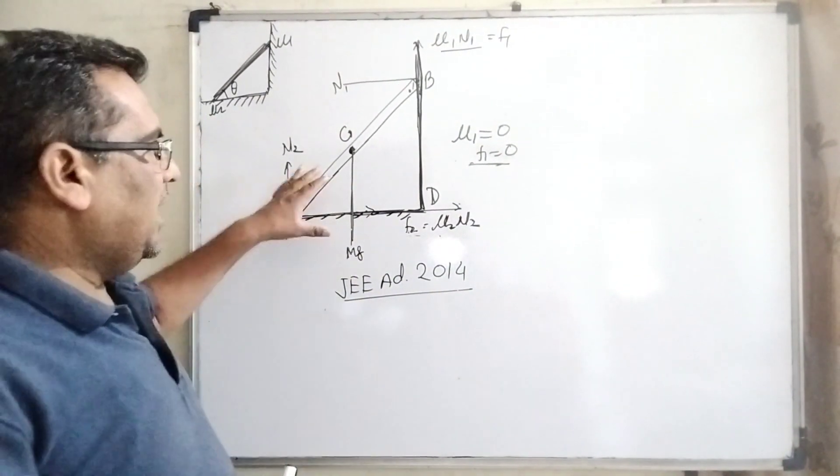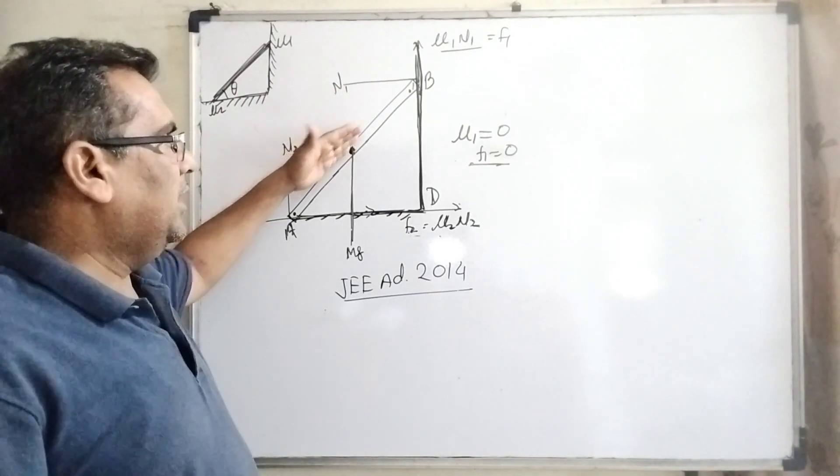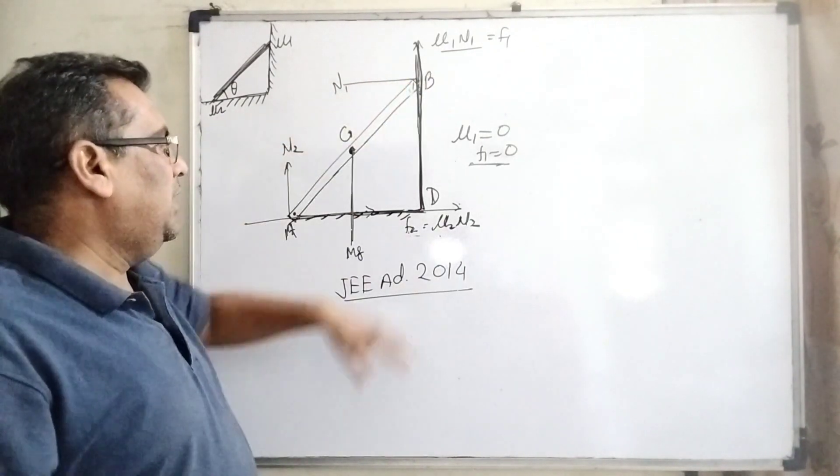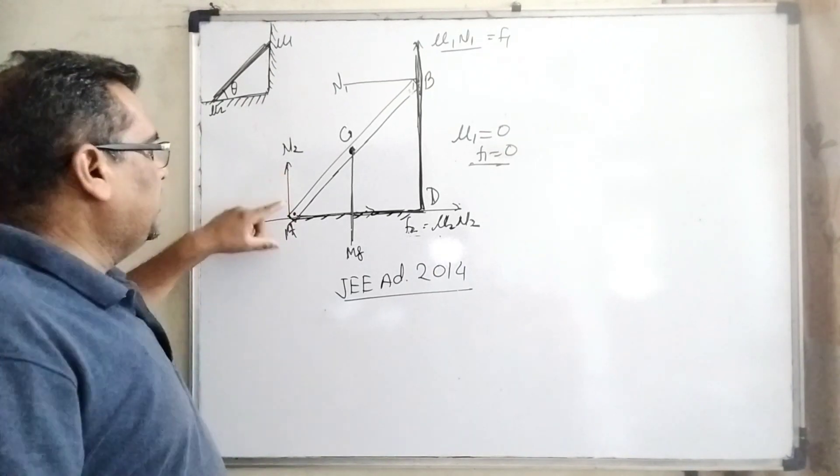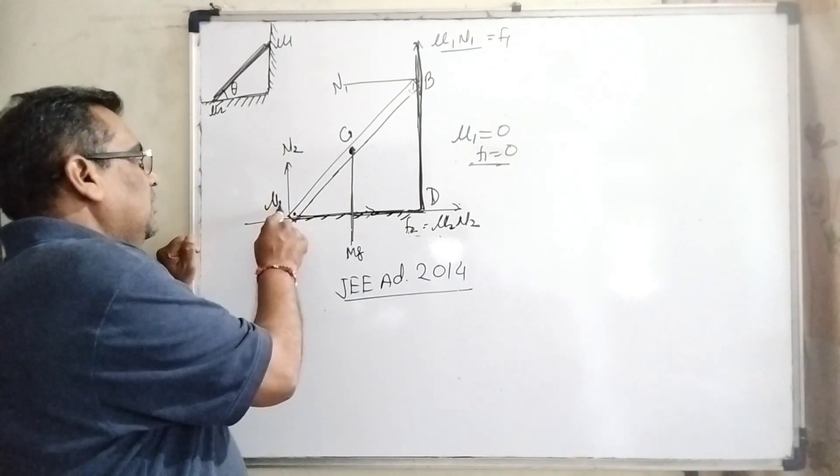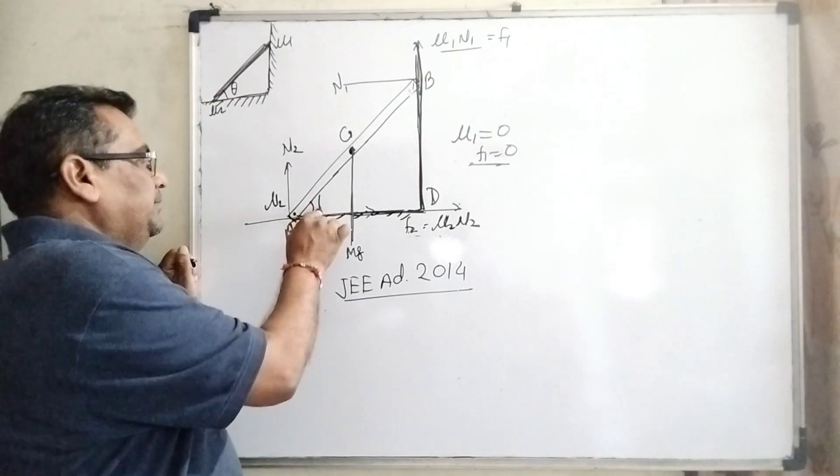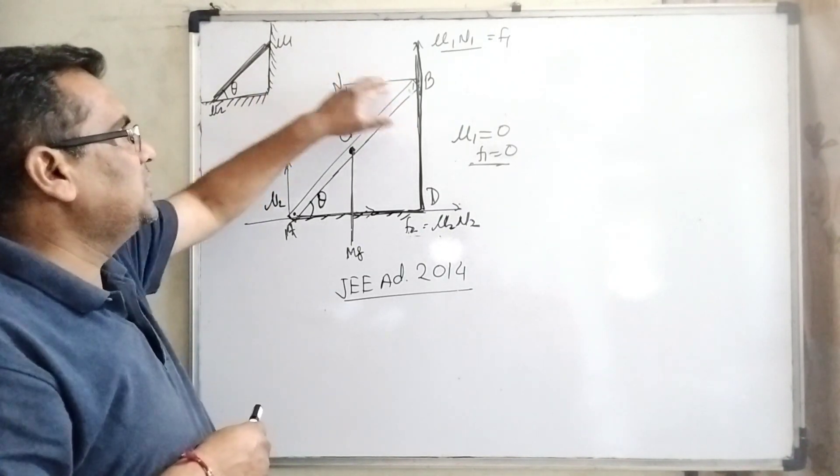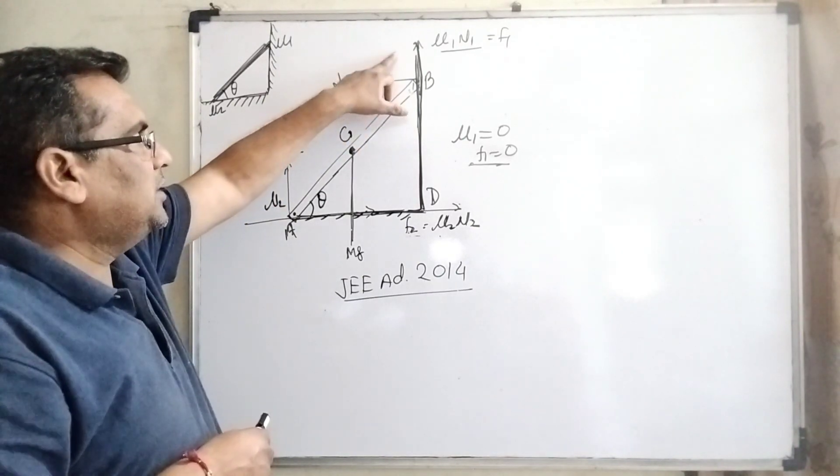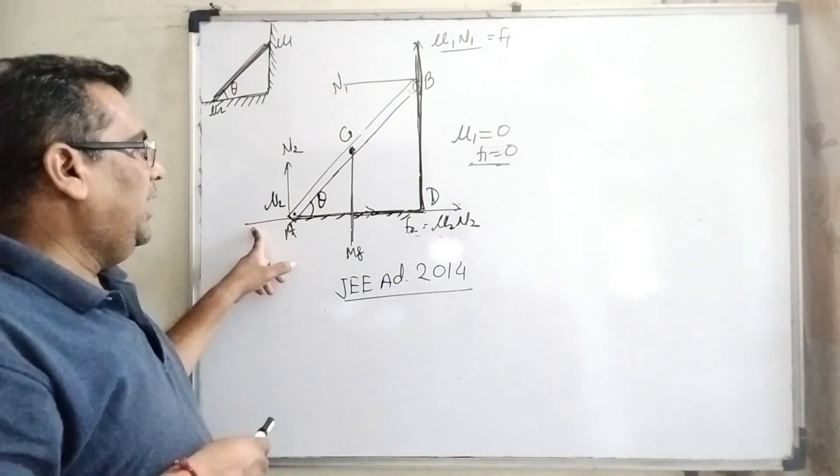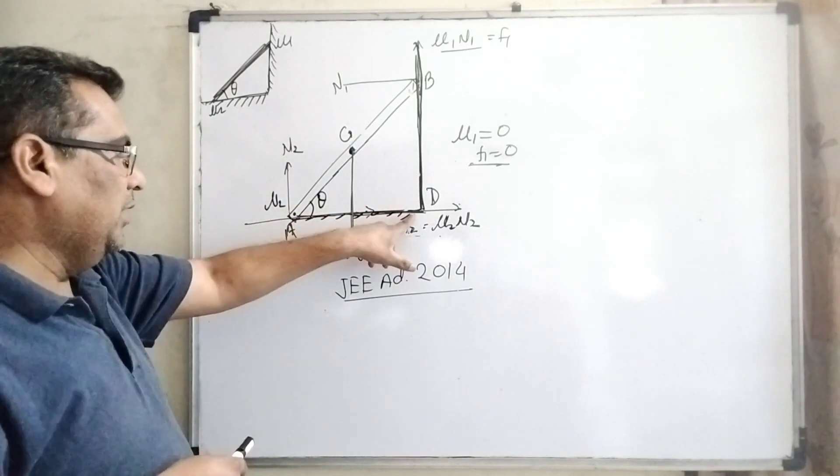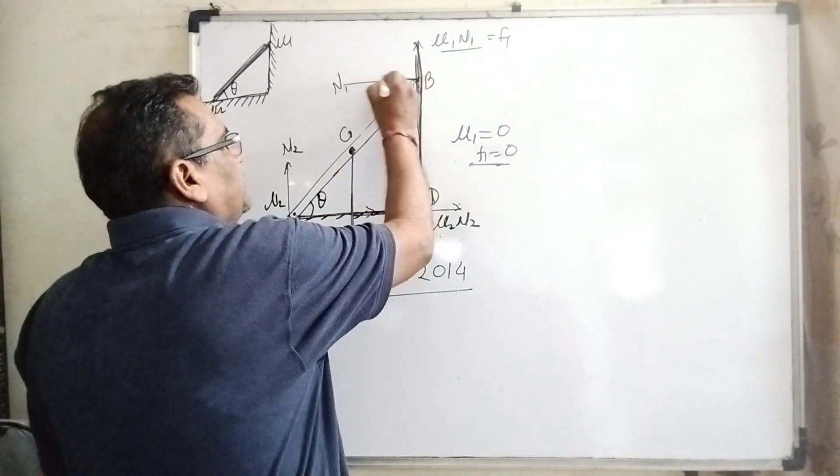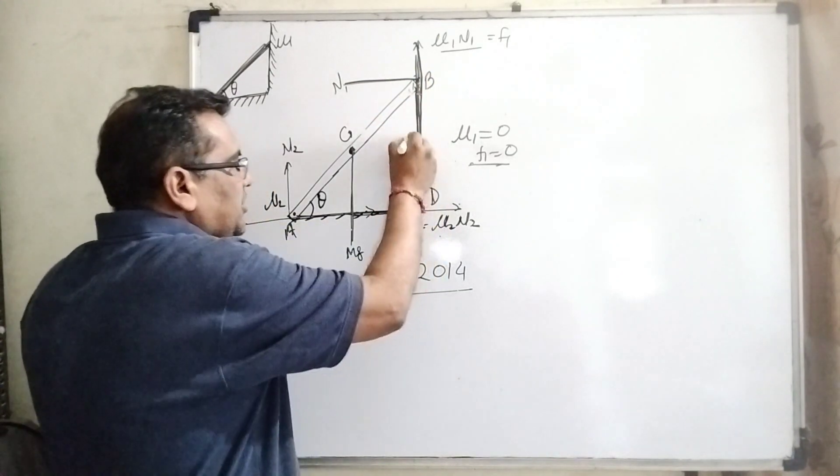Let's see what the diagram says. Here you can see a ladder leaning against the wall, and here the friction coefficient is given mu1, and at the end of the floor, friction coefficient is given mu2. And it's making angle theta. You can see that when it just begins to slip, the normal force N1 is applied normal to the surface at B, and same thing here, normal force N2 working normal to the floor surface.